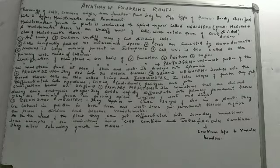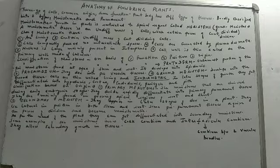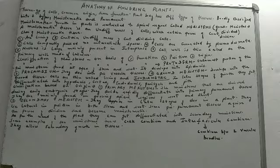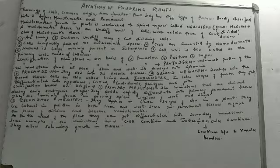Classification of meristems on the basis of function. The first type is protoderm — P-R-O-T-O-D-E-R-M. Protoderm is the outermost portion of the primary meristem, found at the apex of the stem and the roots. Its function is that it develops into the epidermis. So the main function of protoderm is to develop into epidermis.